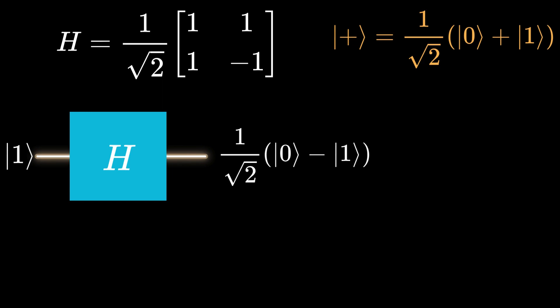Recall that the superposition of cat0 and cat1 with the plus 1 phase is denoted as cat plus, and with the plus 1 and minus 1 phases for cat0 and cat1 respectively as cat minus.